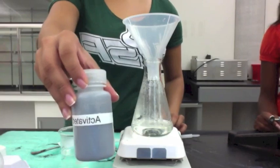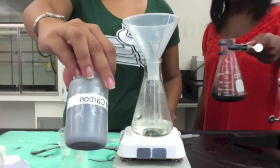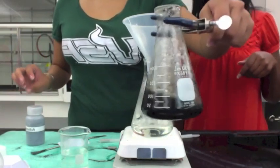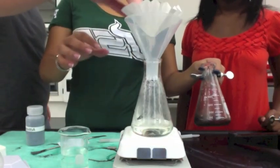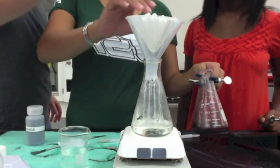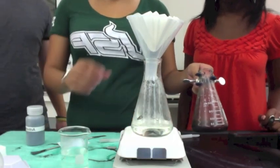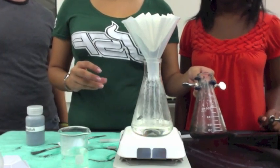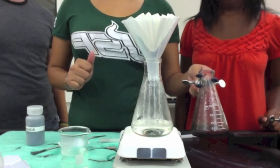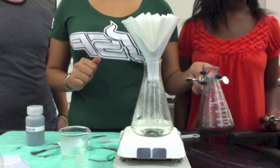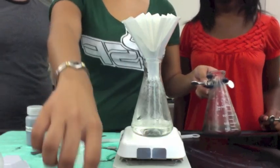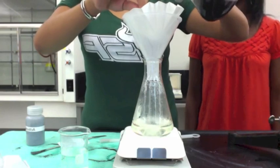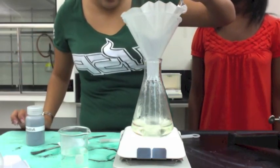We added activated carbon to the yellow solution and we're going to do a steam filtration. We're adding the solution with the activated carbon into boiling water.